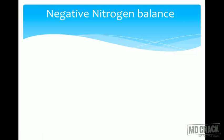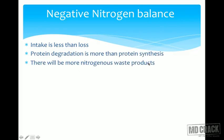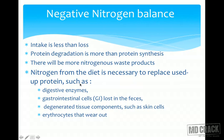Negative nitrogen balance means intake is less than loss — protein degradation exceeds protein synthesis, resulting in net protein loss from the body. There will be more nitrogenous waste products. Nitrogen from the diet is necessary to replace proteins such as digestive enzymes, GI cells lost in feces, degenerated tissue components like skin scales and erythrocytes. If even this minimum is not met, the person enters negative nitrogen balance.